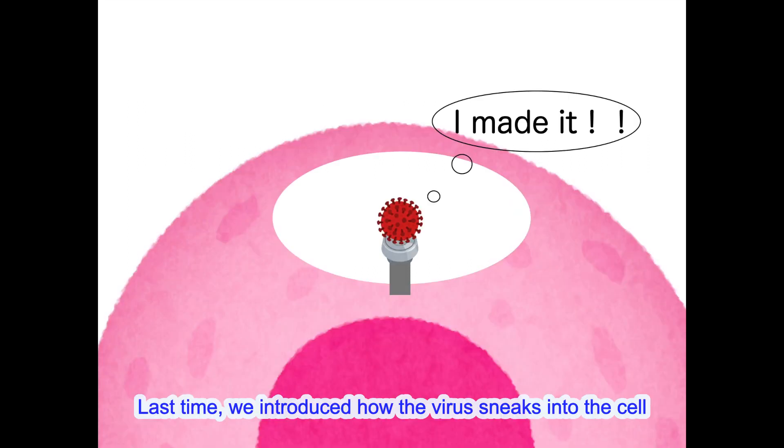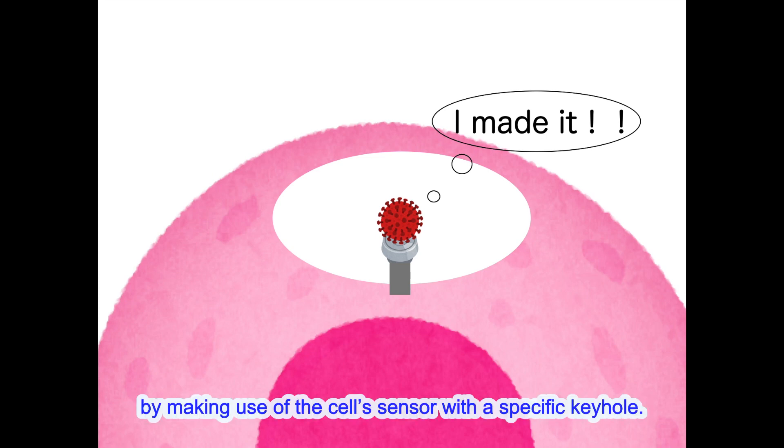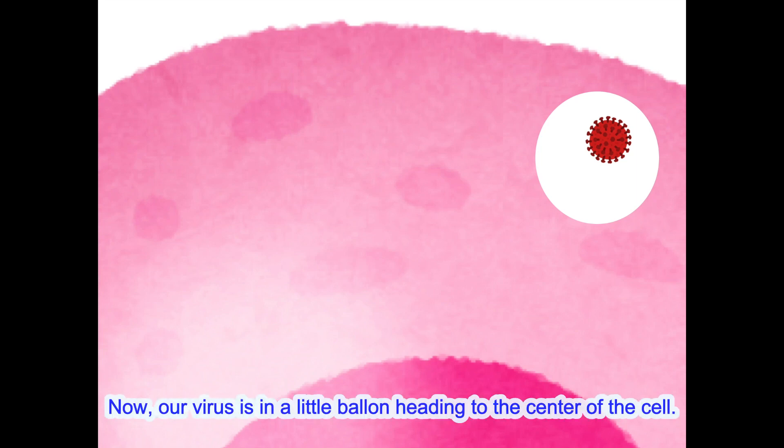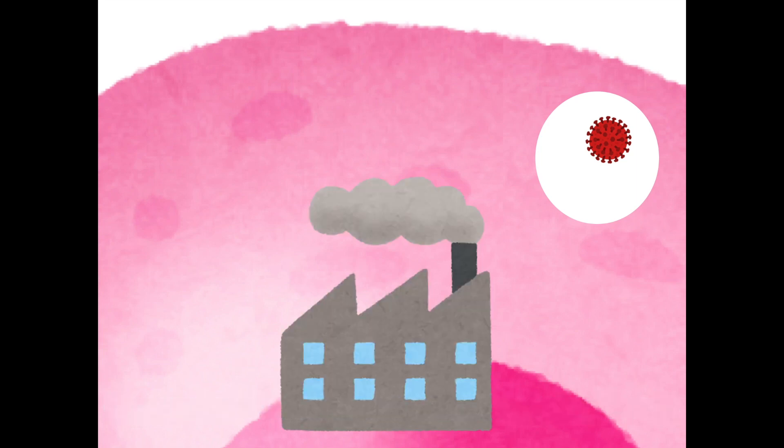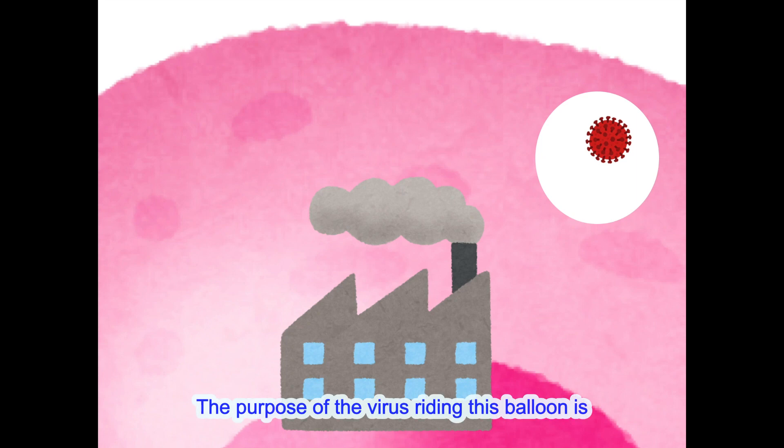Last time we introduced how the virus sneaks into the cell by making use of the cell's sensor with a specific keyhole. Now our virus is in a little balloon heading to the center of the cell. The purpose of the virus riding this balloon is to go to the cell's factory and make its own copy.